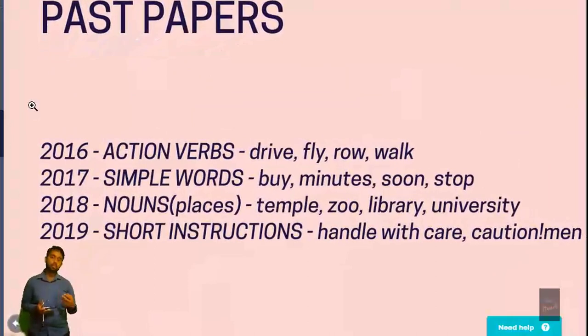When we came to 2018, the structure was much simpler. For example, we have to know about places: temple, zoo, library, airport, bus stand, these sorts of easy nouns.